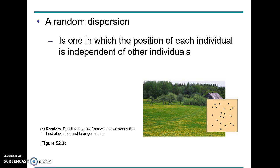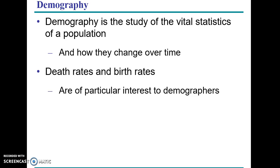Random dispersion involves individuals that live independently from other individuals - they are not pack animals or herds. Plants are a famous example because their reproduction is often dependent on wind or water dispersal, spreading them to various different places. These organisms are usually generalists that can live in different places and are well-suited to varied environments - they can also be part of primary successions.